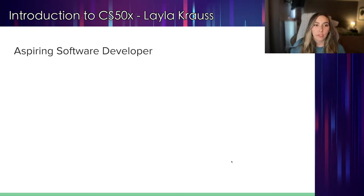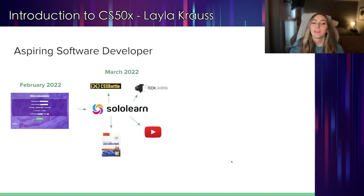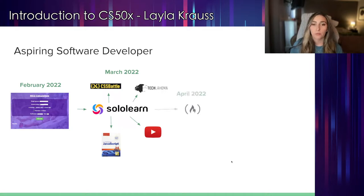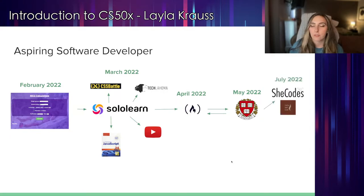A little bit about how I got started in software development. It all started in February of this year where I had an idea — I wanted to create a calculator that I could actually use in my day job. I worked on that application for just a few days, and I was hooked. I wanted to learn more. So I started with free learning resources online like Sololearn, watched some YouTube videos, joined TechLahoma, which was very helpful. I learned about Free Code Camp, started doing a couple of courses there, and then around May is when I enrolled in a course called CS50X, and that is the topic of the day.